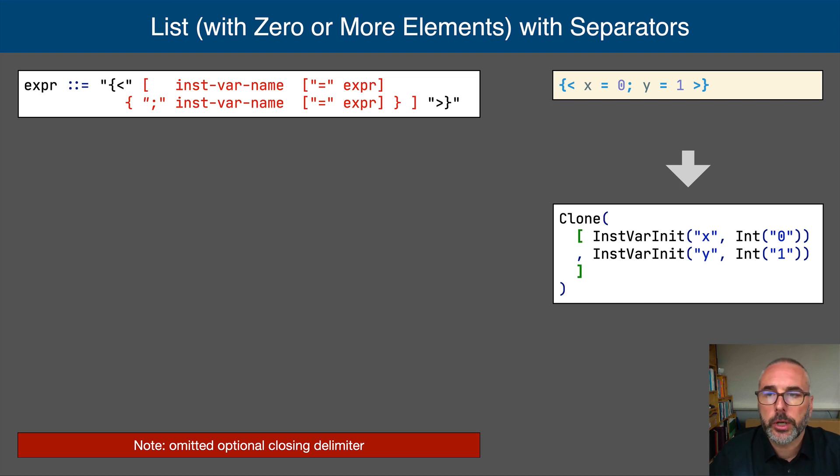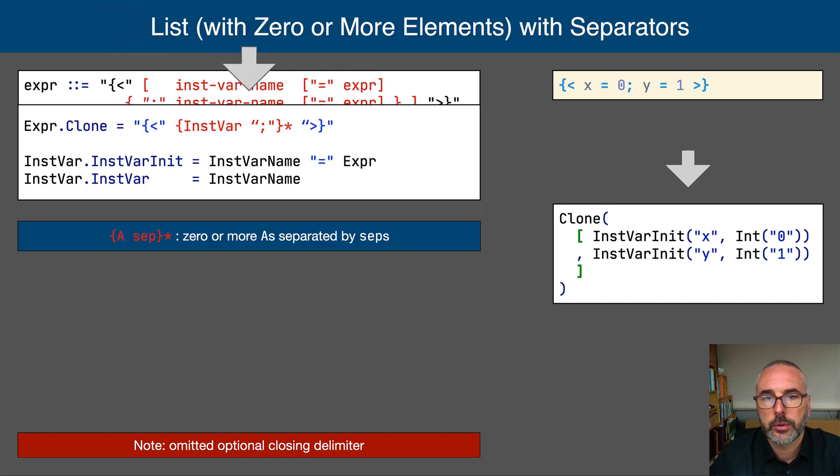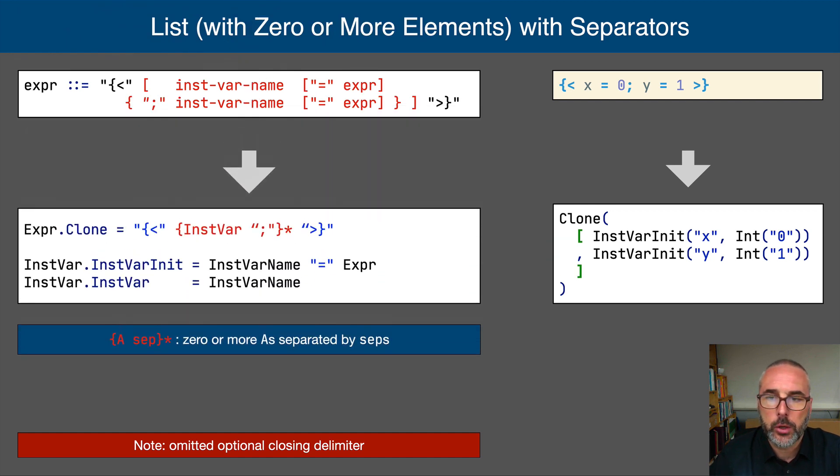Possibly empty lists with separators are encoded as an optional non-empty list in OBNF. In SDF3 we encode this using the star variant of the list with separator construct to directly express this and get a proper abstract syntax structure. Note that the construct only applies to non-terminals, so we lift the definition of instance variable initialization to separate productions.